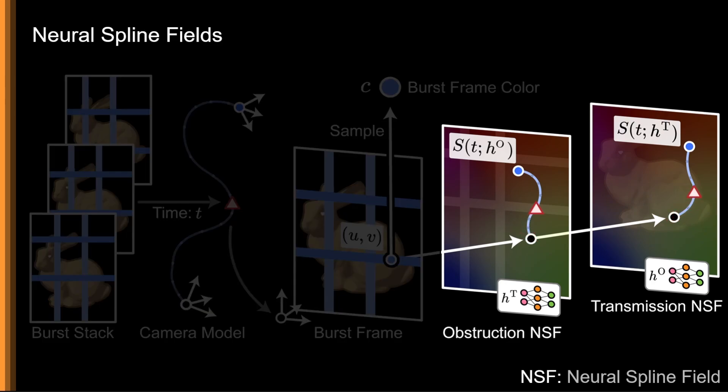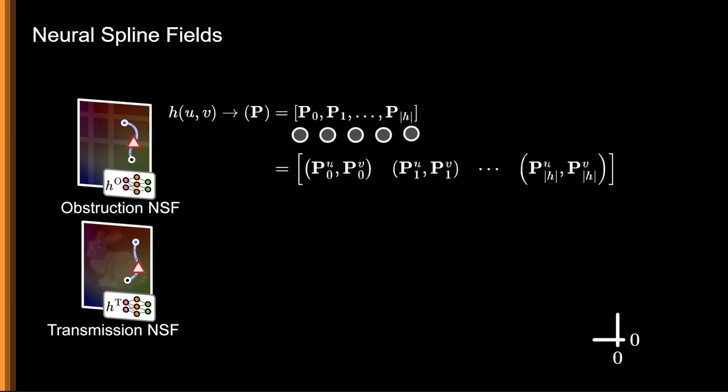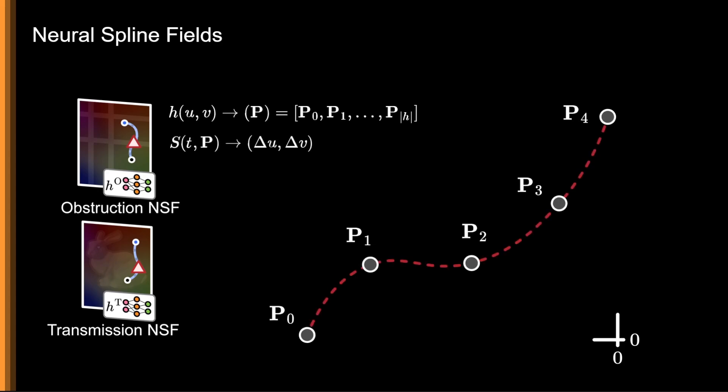Taking a closer look at these neural spline fields, we see that each is a network h which maps a two-dimensional image coordinate uv to a 2 by n vector of points p. Interpreting these points as the control points of a spline s, we can interpolate these points for a time t to get a smooth two-dimensional function of flow delta u delta v.